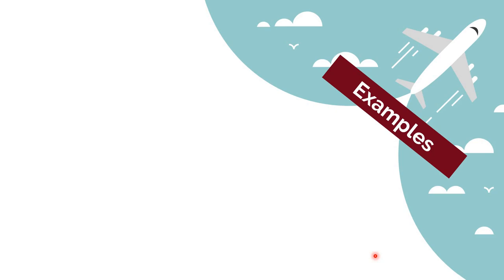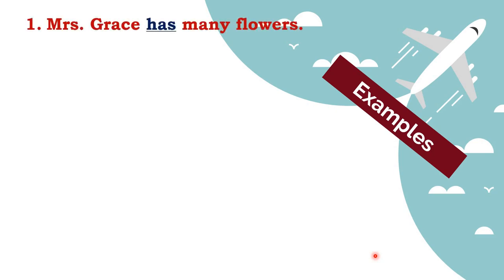Let us look at some examples to clarify the concept. First one: 'Mrs. Grace has many flowers.' She is not doing any action to the flowers; she is just having many flowers. So 'has' represents a state of being - to have something is a state of being.